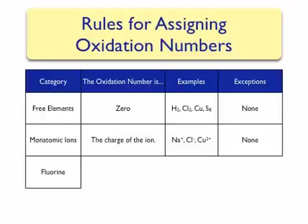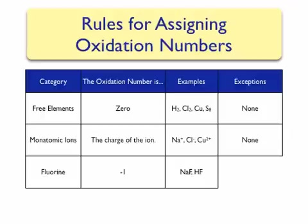The third category is fluorine. No matter what type of compound fluorine is involved with, it will always have a minus one oxidation number. For example, the ionic compound sodium fluoride has a fluorine atom with a minus one charge, and therefore a minus one oxidation number. Hydrogen fluoride is a molecular compound; however, in this molecular compound the fluorine will still have a minus one oxidation number. There are no exceptions to this rule.